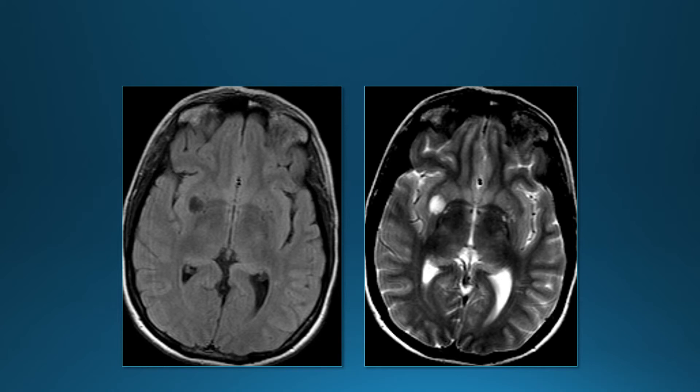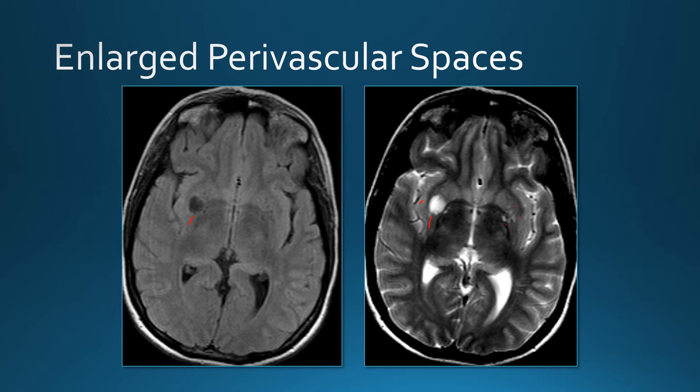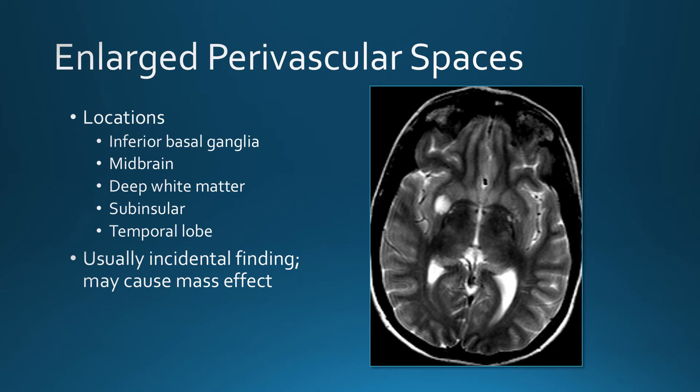Lesion in the basal ganglia, similar to CSF on FLAIR and T2. You can also see a few other small dots in the basal ganglia with similar signal — these are enlarged perivascular spaces. They occur in a number of locations; the most common is the inferior basal ganglia. They can also occur in the midbrain, deep white matter, sub-insular region, and temporal lobe. This is generally an incidental finding, though there may be associated mass effect when they get large.